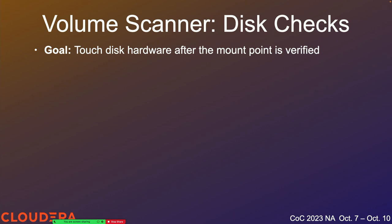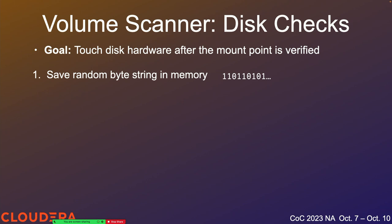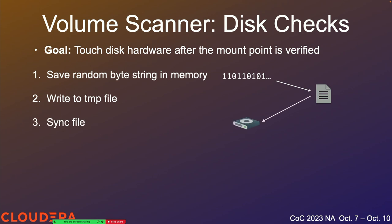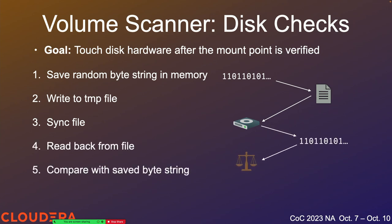The disk checks are where we actually touch the hardware. Permissions and filesystem checks can be cached in the OS, so there's no guarantee that just because a directory exists the disk is still plugged in and running. In this step we generate a byte string, write it to a temp file, make a sync call to flush it out of all caches and actually hit the hardware, read it back, and check it against what we had in memory to make sure everything came back correctly.